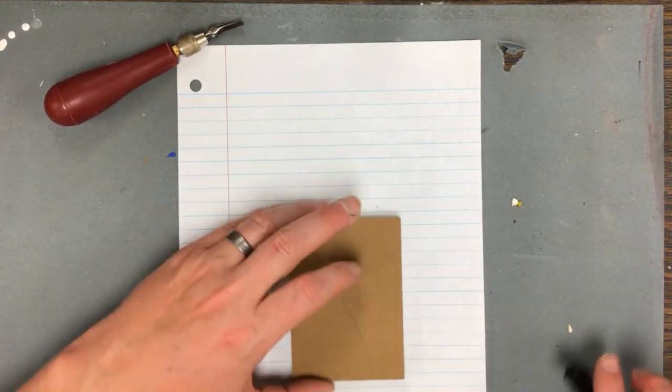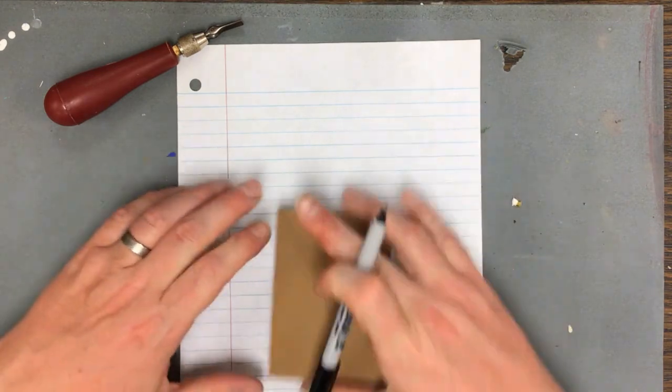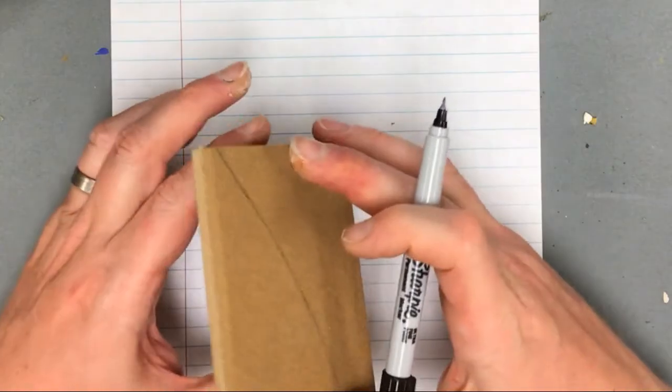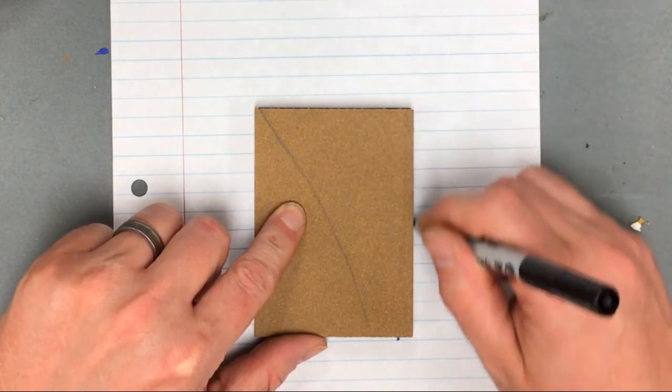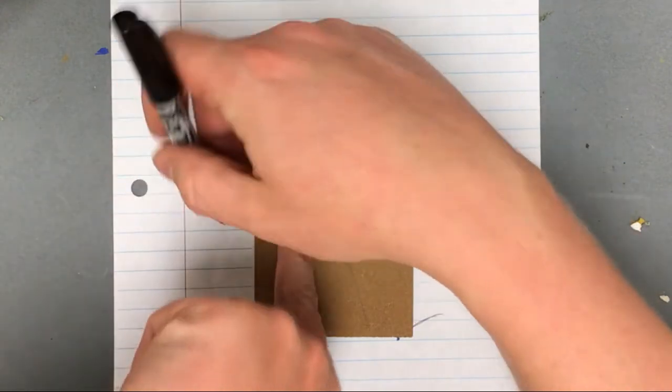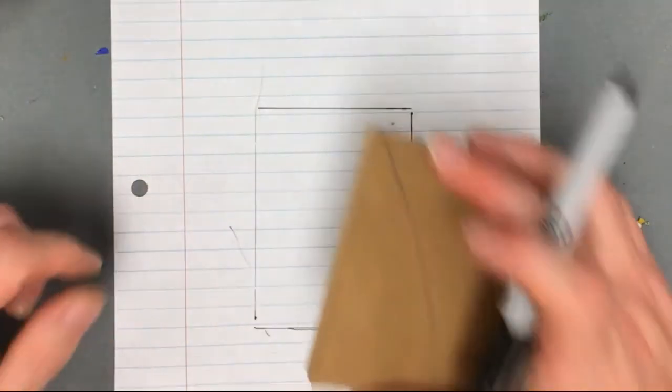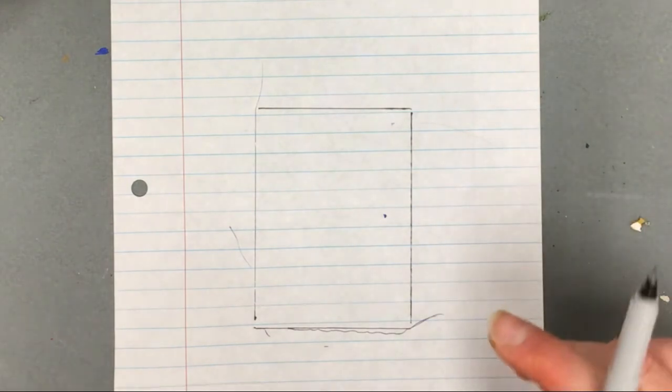I'm going to grab a scrap sheet of paper here and I want to get the size of this print. So I'm going to take this and then I'm just going to trace out this rectangle so that I know the exact same thing. And you'll set up your actual project this way as well.